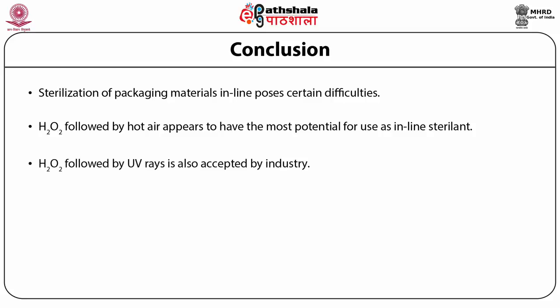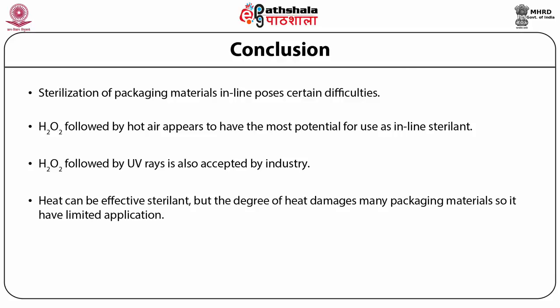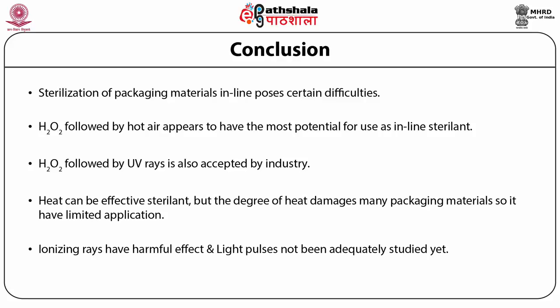Sterilization of packaging materials using hydrogen peroxide followed by UV irradiation has also been accepted for industrial application. Dry heat, saturated steam and superheated steam can be effective sterilants, but the degree of heat damage to many packaging materials gives them limited application. Ionizing rays are not widely accepted as they have harmful effects on persons working in the plant.